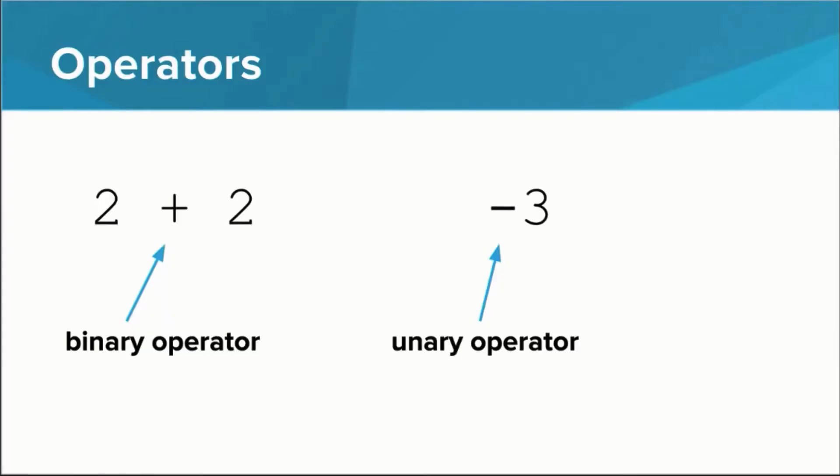The negation operator is an example of what's called a unary operator, and that means that it only applies to one thing, whatever is to the right of it. Most of the operators occur between two things, a left side and a right side, and these are called binary operators.